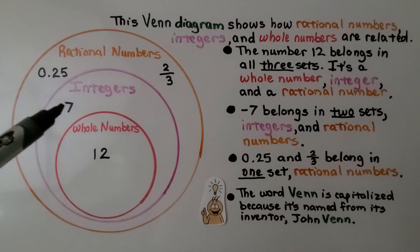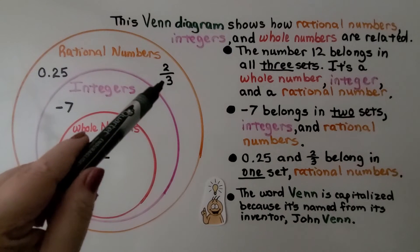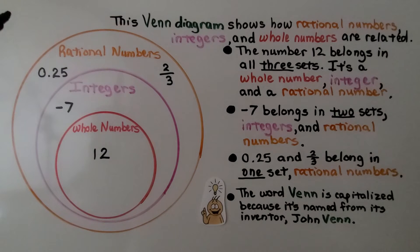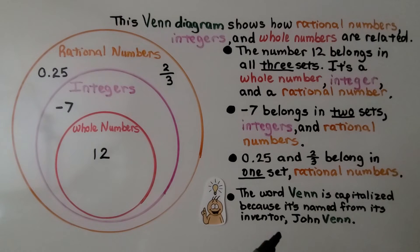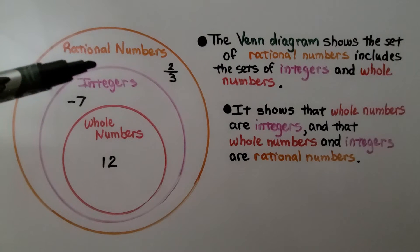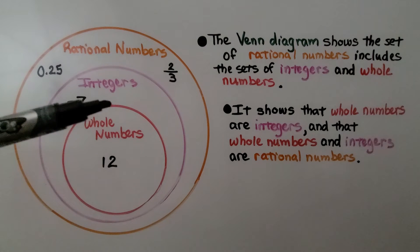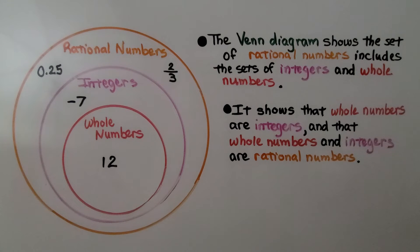Negative seven belongs in two sets: integers and rational numbers. And 25 hundredths and two thirds belong in one set: rational numbers. The word Venn is capitalized because it's named after its inventor, John Venn. The Venn diagram shows the set of rational numbers includes the sets of integers and whole numbers, and that whole numbers and integers are rational numbers.